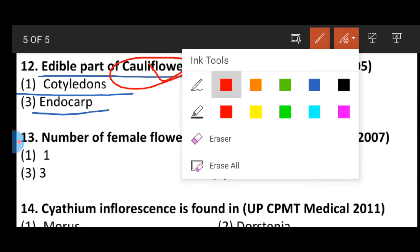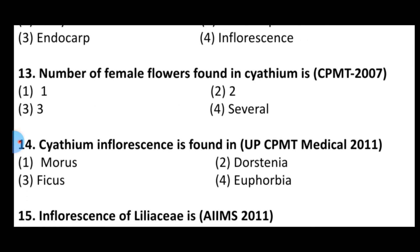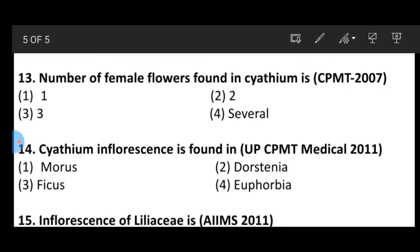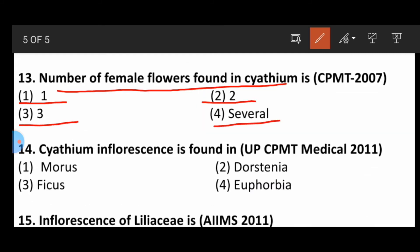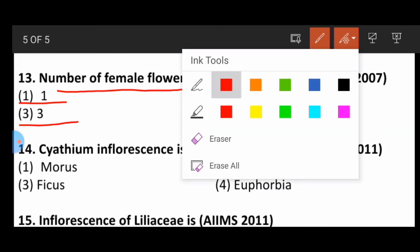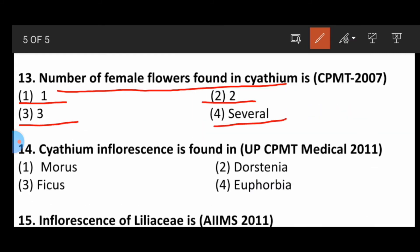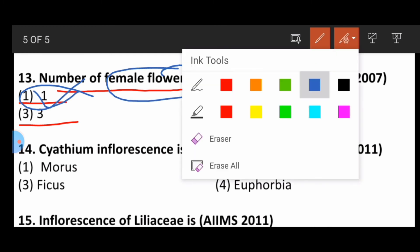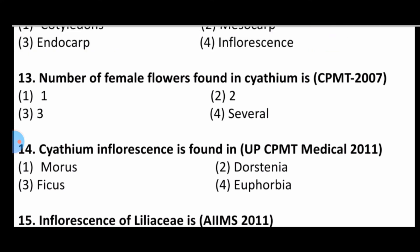Question number thirteen: The number of female flowers found in the cyathium is — option one: one, option two: two, option three: three, option four: several. The correct answer is one — only one female flower is found in the cyathium type of inflorescence.